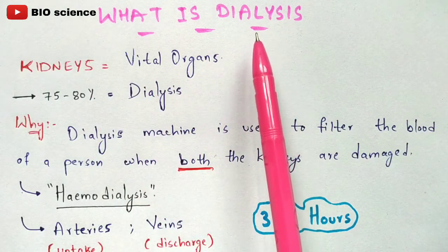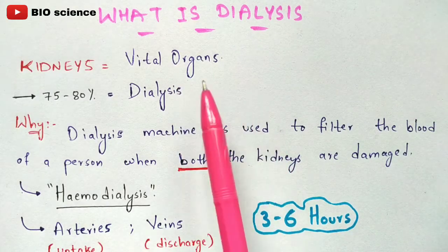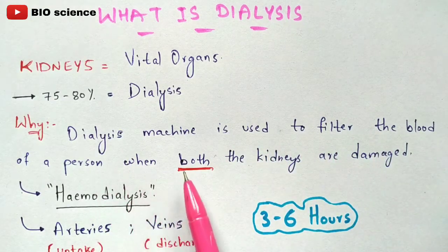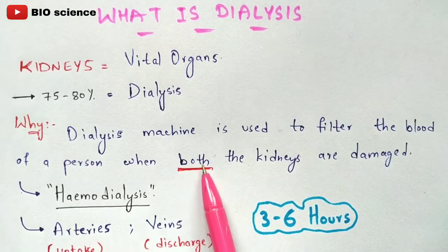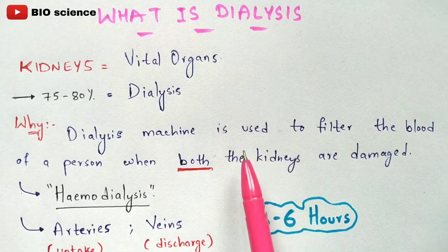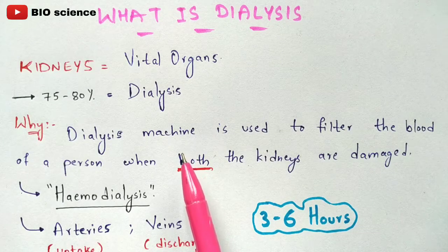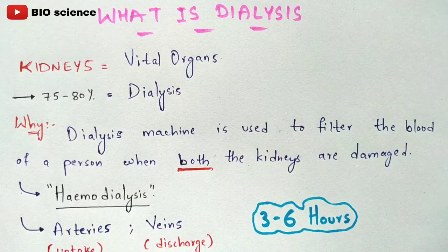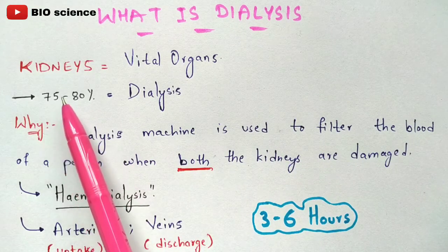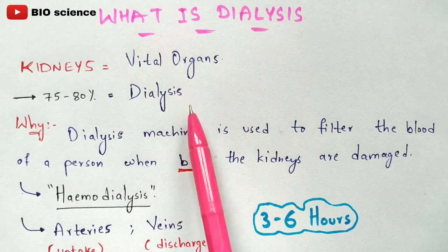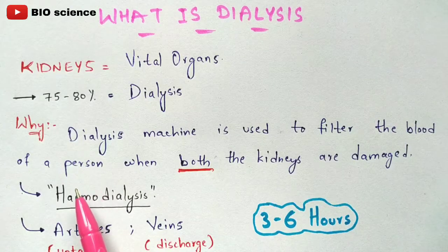Dialysis is the process where purification of the blood is done, and since its functions are similar to a kidney, dialysis is called an artificial kidney. A dialysis machine is used to filter the blood of a person where both kidneys are damaged. If only one kidney fails, the other kidney performs the purification function. But if both kidneys fail, the only choice is dialysis. This procedure is used when both kidneys are failed or damaged — specifically when 75 to 80 percent of both kidneys are damaged.